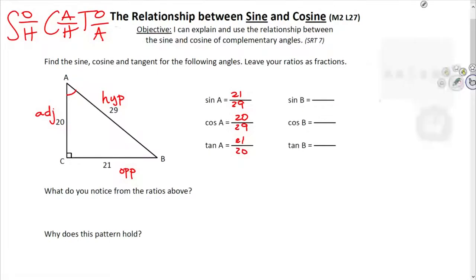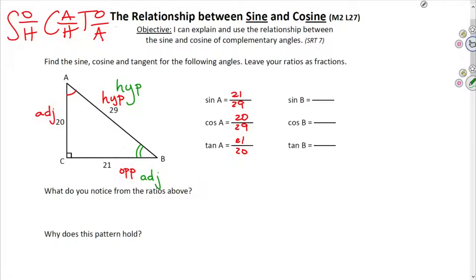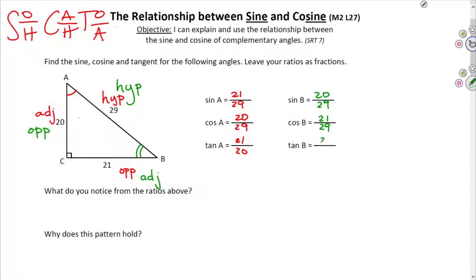Now, if I switch acute angles and look at angle B, the hypotenuse stays the same. But the adjacent — the leg next to angle B — is now 21. And the leg opposite of angle B changes as well. The sine of angle B is the opposite of B over the hypotenuse, which is 20 over 29.